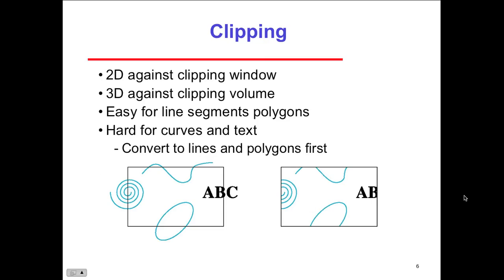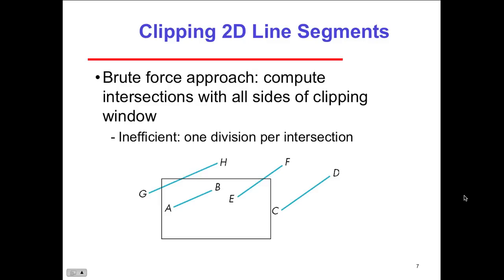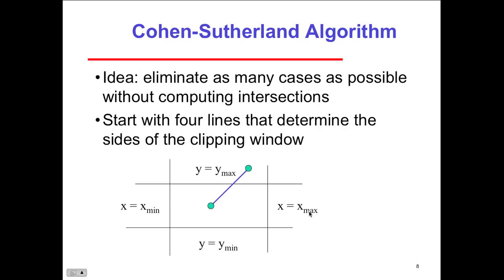For clipping a 2D line segment, a brute force approach computes intersections with all sides of the clipping window — inefficient because it requires one division per intersection. We have the Cohen-Sutherland algorithm instead. There are many different algorithm approaches to clipping with their own pros and cons. The idea is to eliminate as many cases as possible without computing intersections, since computing intersections is too time-consuming.